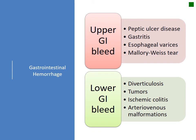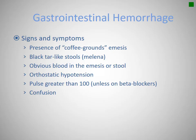Gastrointestinal hemorrhage is divided into upper and lower, differentiated by which end it's coming out of — if it's the mouth, it's upper; if it's the other end, it's lower. Treatment in the pre-hospital realm doesn't change much between the two. We want to treat signs and symptoms such as hypotension and tachycardia and get them to a hospital. Coffee-ground or dark stool or dark emesis is usually venous or dried blood, meaning it's been there a while. Bright red blood coming out of either end is a bad sign and that patient needs to get to the hospital quickly.